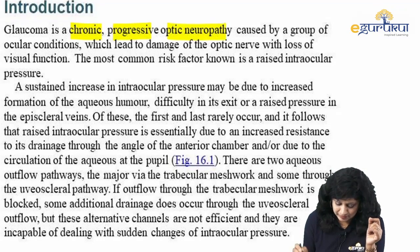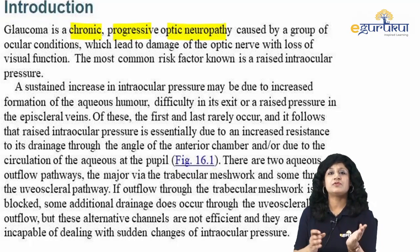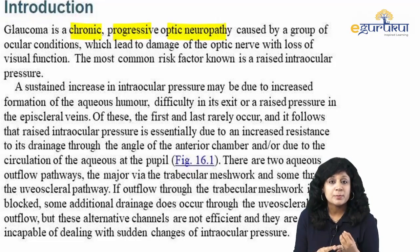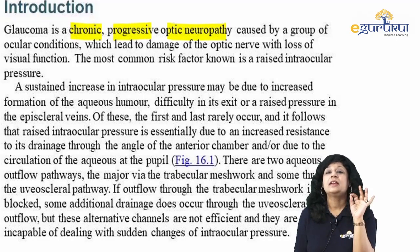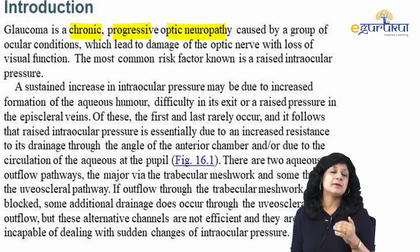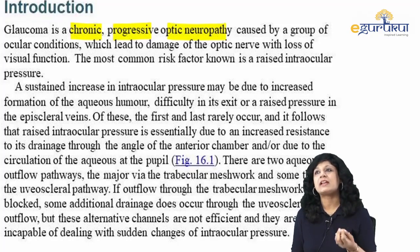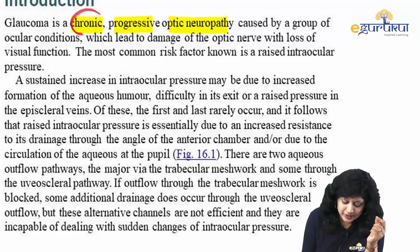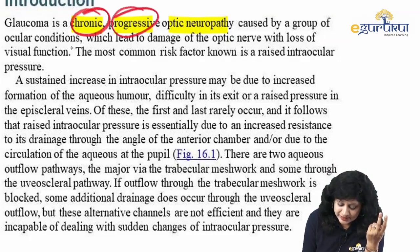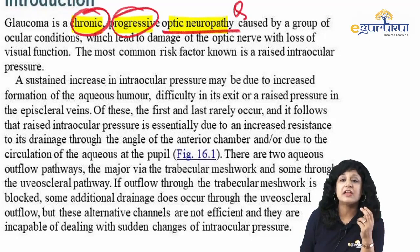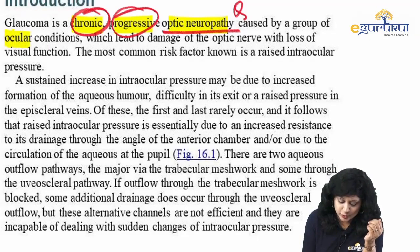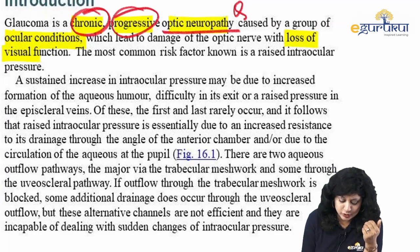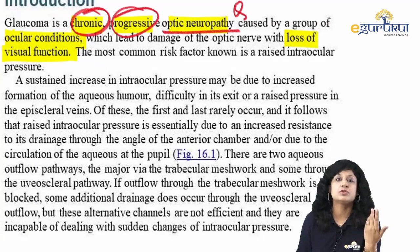Glaucoma is a chronic progressive optic neuropathy. It is a multifactorial optic neuropathy characterized by retinal ganglionic cell death by apoptosis. This is a chronic and progressive disease — an optic neuropathy occurring due to a group of ocular conditions, which is why we say it's a multifactorial condition. It leads to the loss of visual function; the optic neuropathy leads to visual field defects.